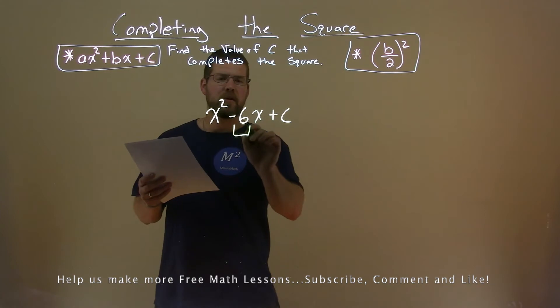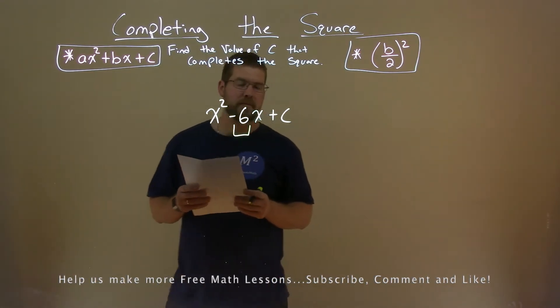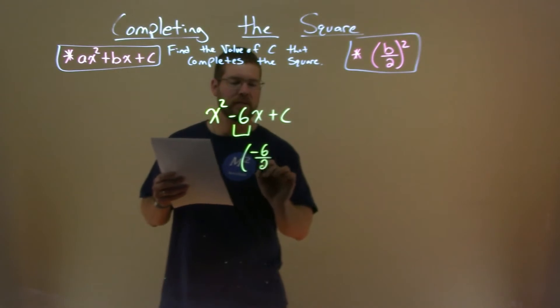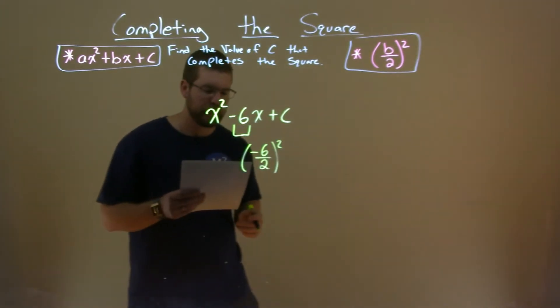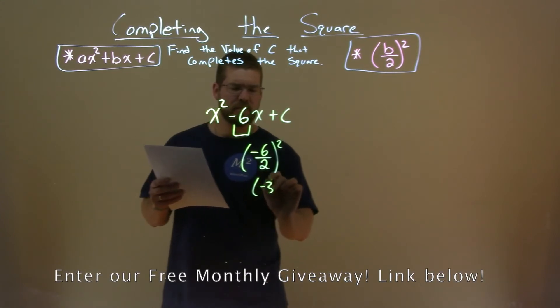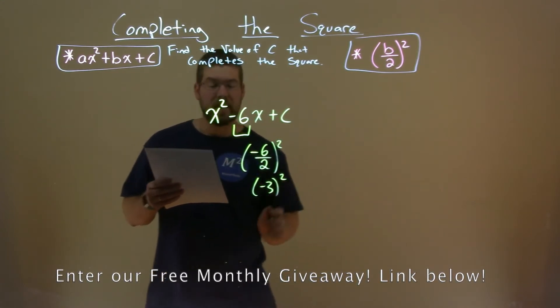We first look at our b value negative 6 and we use our formula here negative 6 divided by 2 all squared. Well negative 6 divided by 2 is negative 3 and we need to square that.